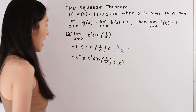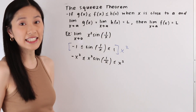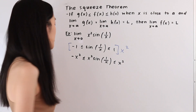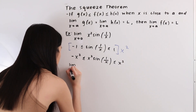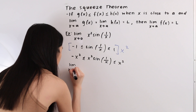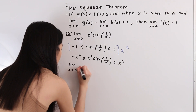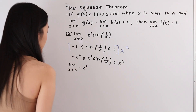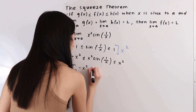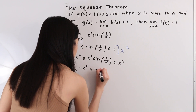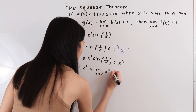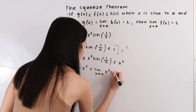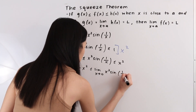As our next step, we're going to take the limit of this entire inequality. So we have the limit as x approaches 0 of negative x² ≤ the limit as x approaches 0 of x² sin(1/x).